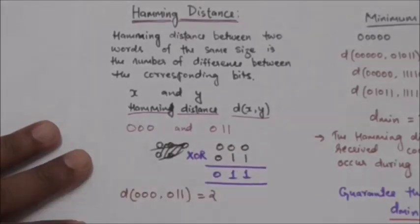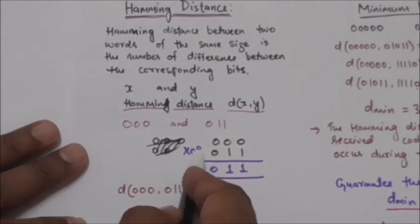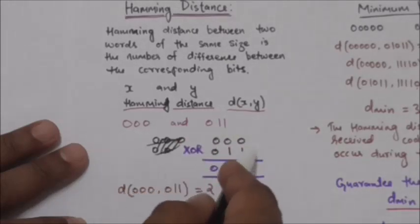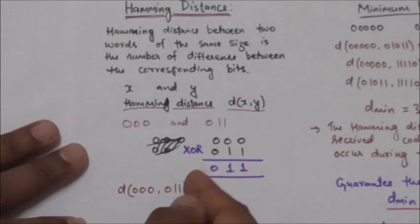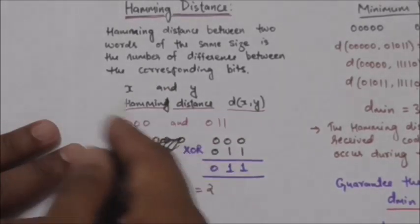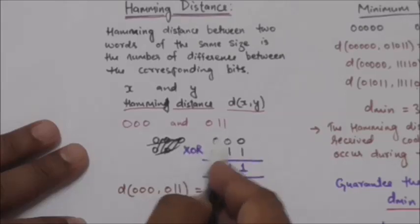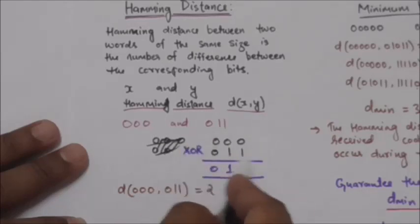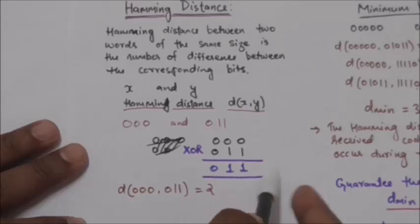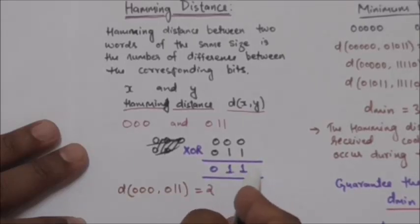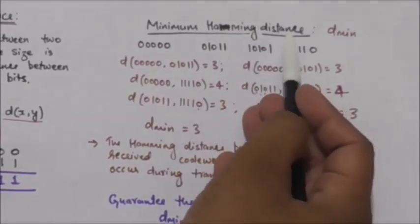To find the Hamming distance between two words, we apply the XOR (exclusive OR) operation on the two words. After applying XOR on the two words, we count the number of ones in the result, and that count gives the Hamming distance. For example, with words 000 and 011: applying XOR gives the result 011. In this result, there are two ones, so the Hamming distance between these two words is 2.